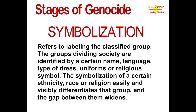Symbolization refers to labeling the classified group. The groups dividing society are divided by a certain name, language, type of dress, uniform, or religious symbol. The symbolization of a certain ethnicity, race, or religion easily and visibly differentiates that group, and the gap between the groups widens.